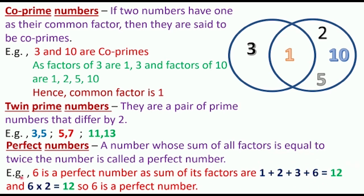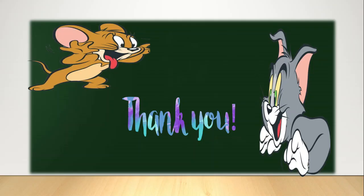When we find twice of 6, we also get 12. The twice of 6 is also 12. So 6 is a perfect number. Thank you.